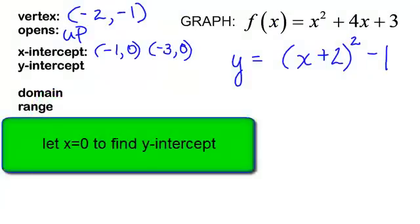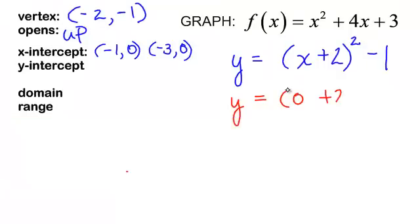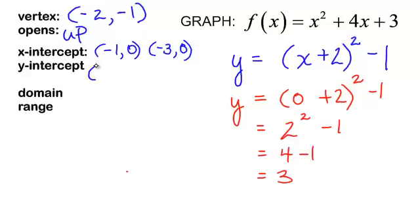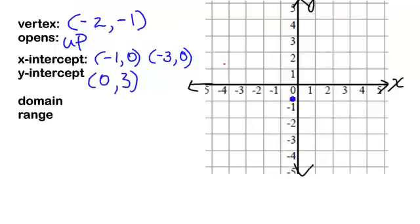Now let's look for the y-intercept — I will let x equal 0. I will have 2 squared minus 1, that will be 4 minus 1, which is 3. So the y-intercept will be 0, 3. Our vertex is negative 2, negative 1. I know my parabola opens up. It has an x-intercept at negative 1, 0 and at negative 3, 0. The y-intercept is at 3. And we can draw our parabola.